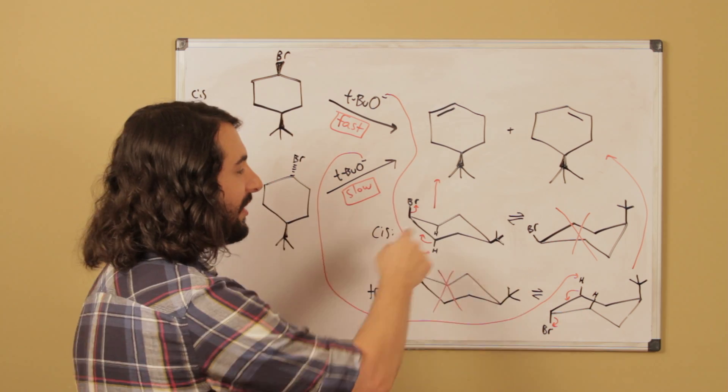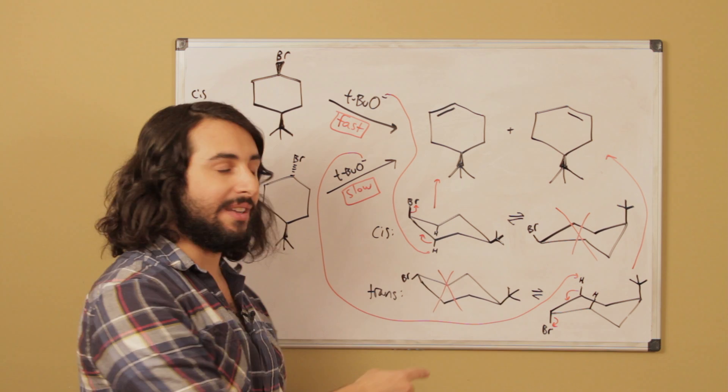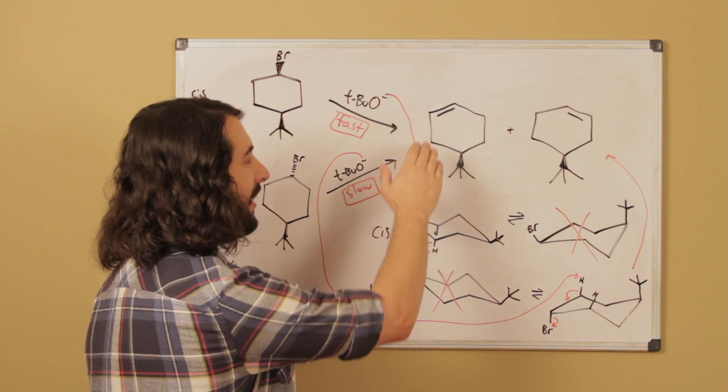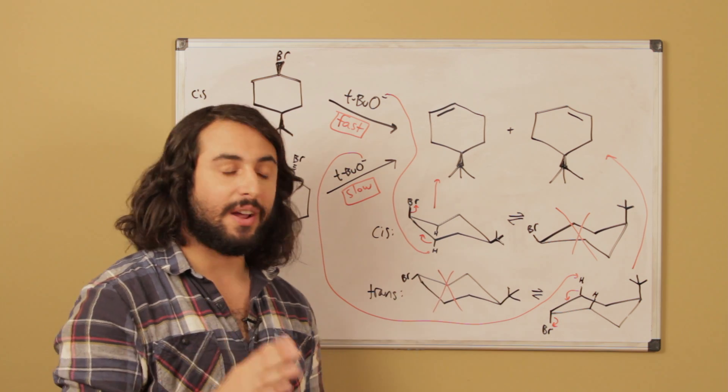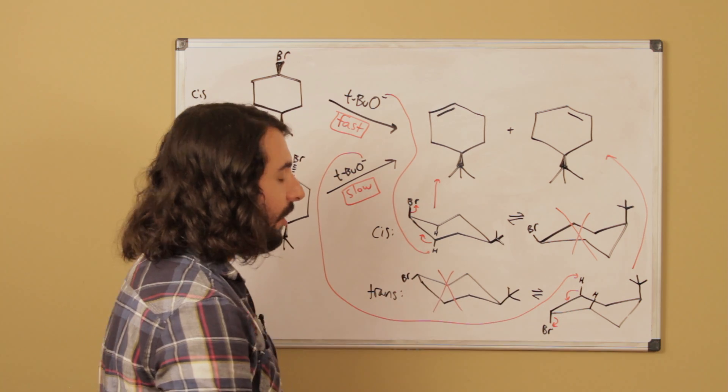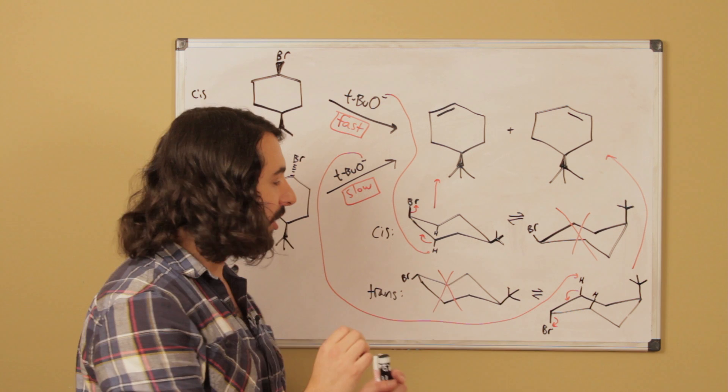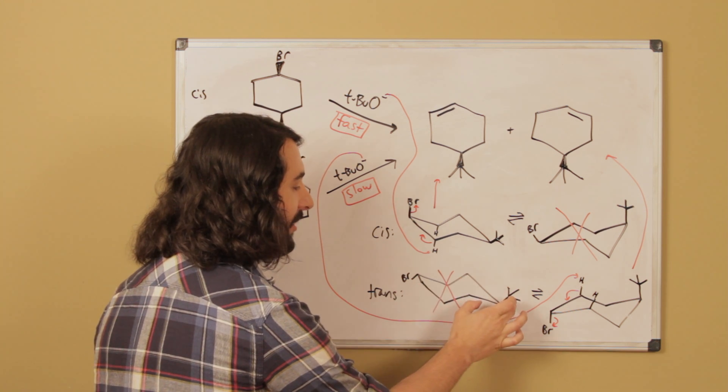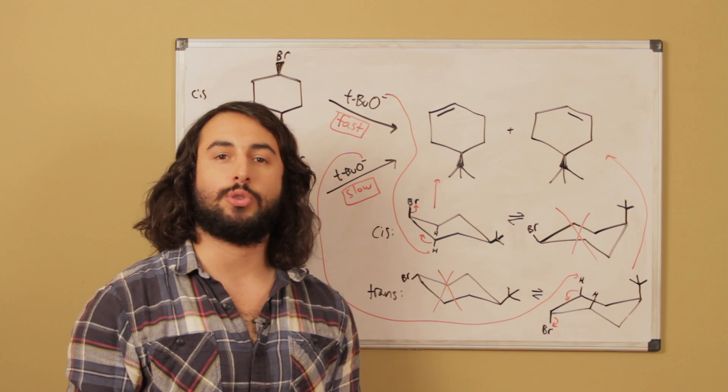So that means that if a tert-butoxide collides with this molecule, it almost always is going to look like this, and so it's probably going to be able to extract a proton and have the elimination go. However, for the trans isomer, the molecules are almost always going to look like this, right, because this is the one where the tert-butyl group is in the equatorial position.